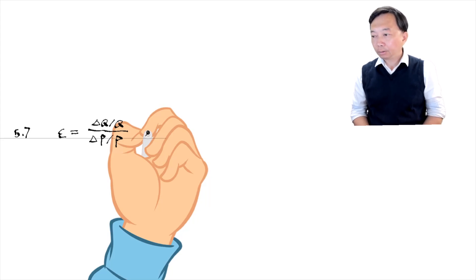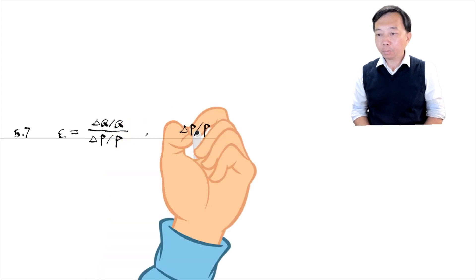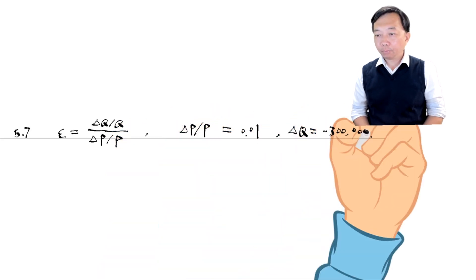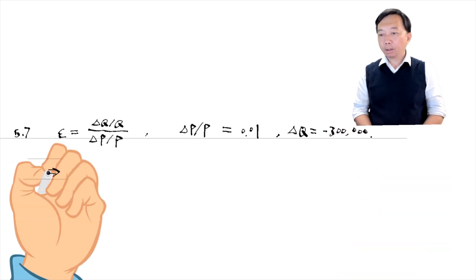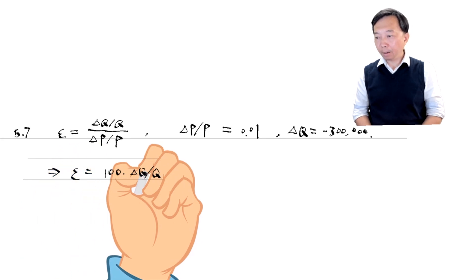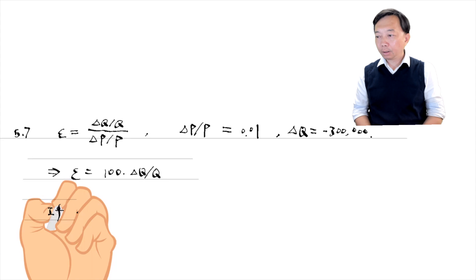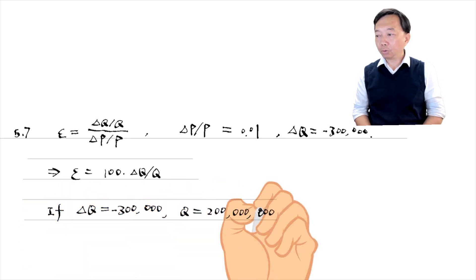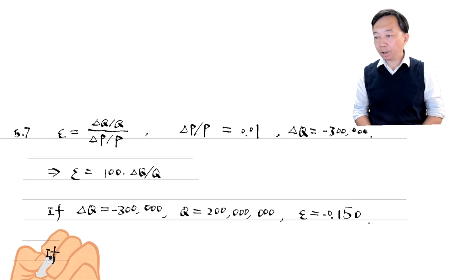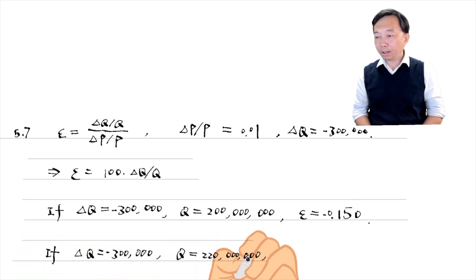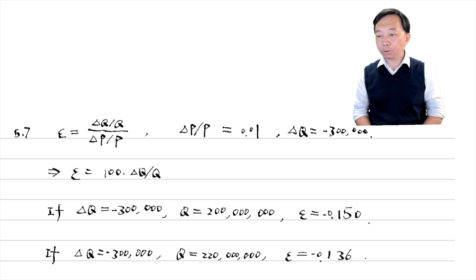We know that the percentage change in the price is 0.01. We also know that the increase in the price leads to a reduction of insurance by 300,000 people. We have epsilon depending on the number of insured people. If 200 million people are insured, the price elasticity of demand is minus 0.150. If 220 million people are insured, the price elasticity of demand is minus 0.136.